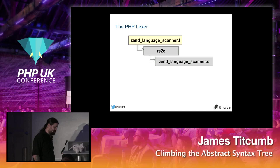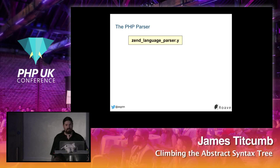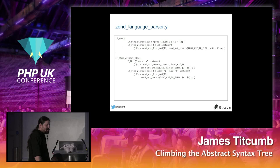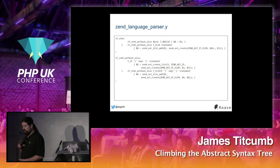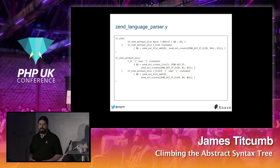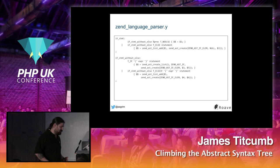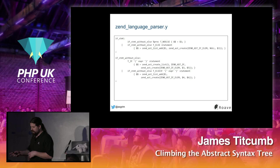The next stage is the parser, which works in a similar way as a state machine. We have another definition file: zend_language_parser.y. Lexing just breaks a string into little tokens, but a parser tries to make sense of those tokens in order — like words in a spoken language that are ordered so they mean something.